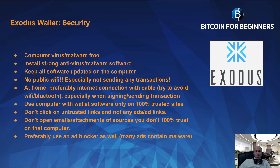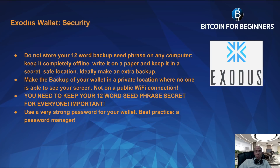Try to avoid Wi-Fi and Bluetooth. Use the computer with the wallet software only on 100% trusted websites. Don't click on untrusted links and don't click any ads or ad links. Don't open email attachments from sources you don't 100% trust on that computer. Preferably use an ad blocker, because many ads contain malware. Do not store your 12-word backup seed phrase on any computer — keep it completely offline. Write it on paper and keep it in a secret safe location. Ideally make an extra backup as well, in a private location where no one can see your screen.